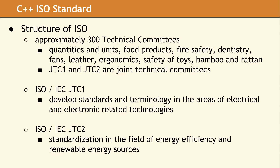ISO consists of about 300 technical committees. Each committee is responsible for creating documentation which defines a standard for some specific area, product, or technology. The standards are developed by the people that need them through a consensus process. Experts from all over the world develop whatever standards are required by their domain. As an example, there are ISO standards for bike helmets, medical devices, and date-time formats.